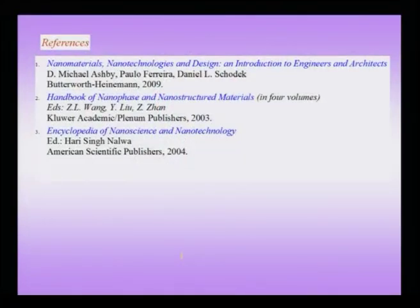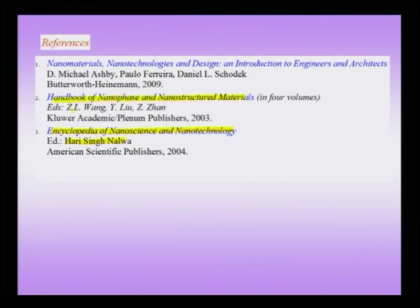Certain beautiful references and texts are currently available. For example, the Encyclopedia of Nanostructure, Nano Science and Nanotechnology edited by Dr. Hari Singh Nalwa, which runs into about ten volumes. There is also the Handbook of Nanostructured Materials edited by Wang, Liu and Zhan. Other equally interesting accessible texts include Nanomaterials, Nanotechnologies and Design, which is an introduction to Engineers and Architects, the book by Ashby, Ferreira and Shodek. Some of these books are handbooks and therefore better for consultation purposes, while others are in textbook format like the one by Professor Ashby.